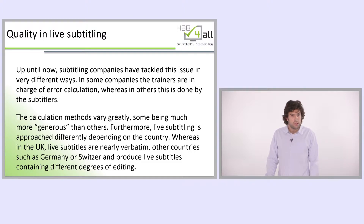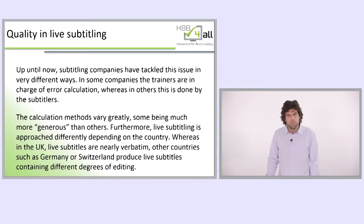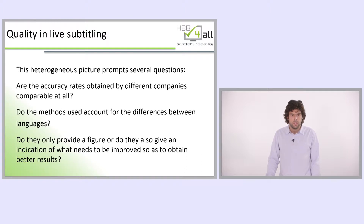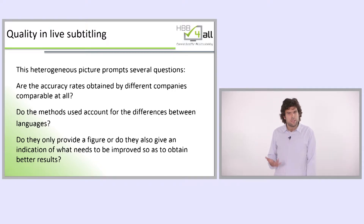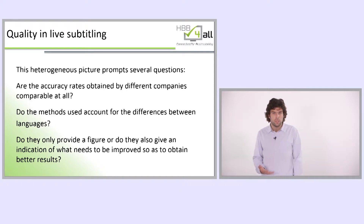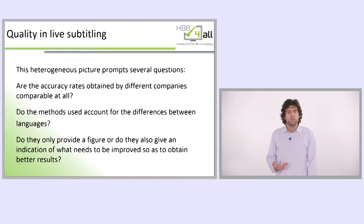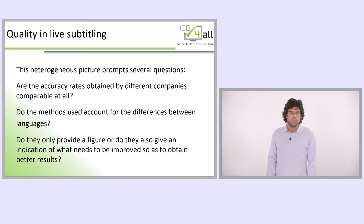The calculation methods vary greatly, some being much more generous than others. Furthermore, live subtitling is approached differently depending on the country. In the UK, for example, live subtitles are nearly verbatim. Other countries, such as Germany or Switzerland, produce live subtitles containing different degrees of editing. This heterogeneous picture prompts several questions: are the accuracy rates obtained by different companies comparable at all? Do the methods used account for the differences between languages? Do they only provide a figure, or do they also give an indication of what needs to be improved?